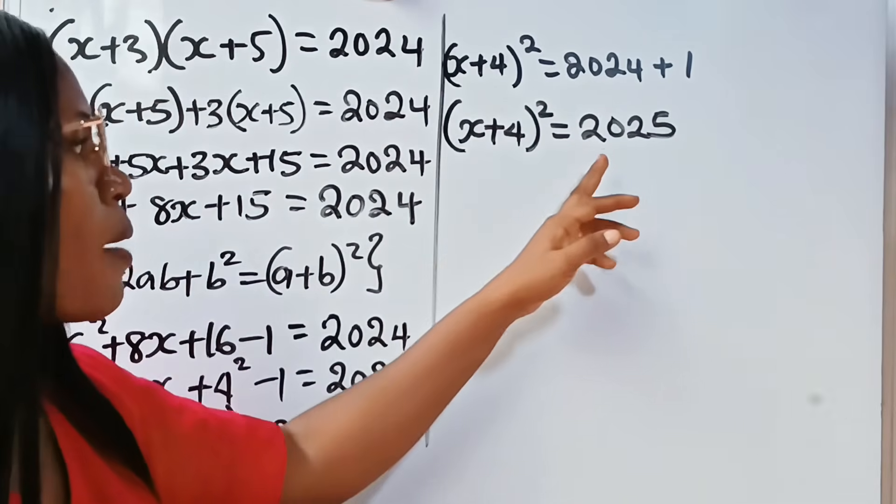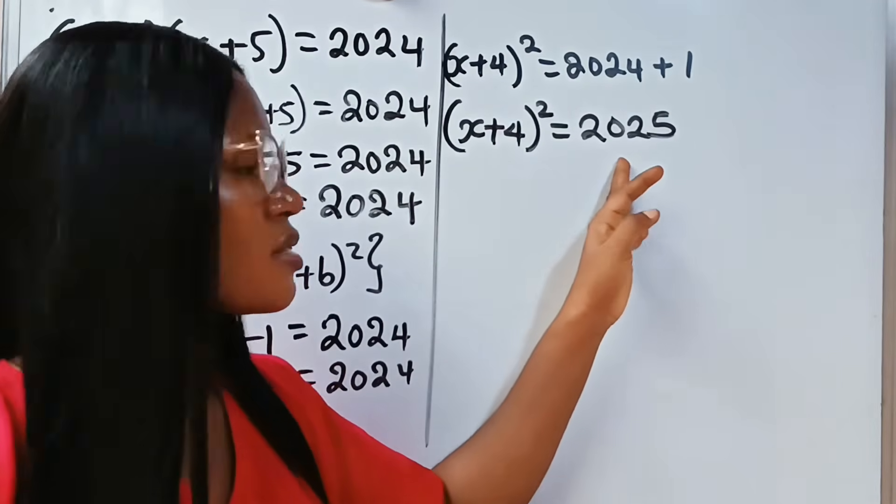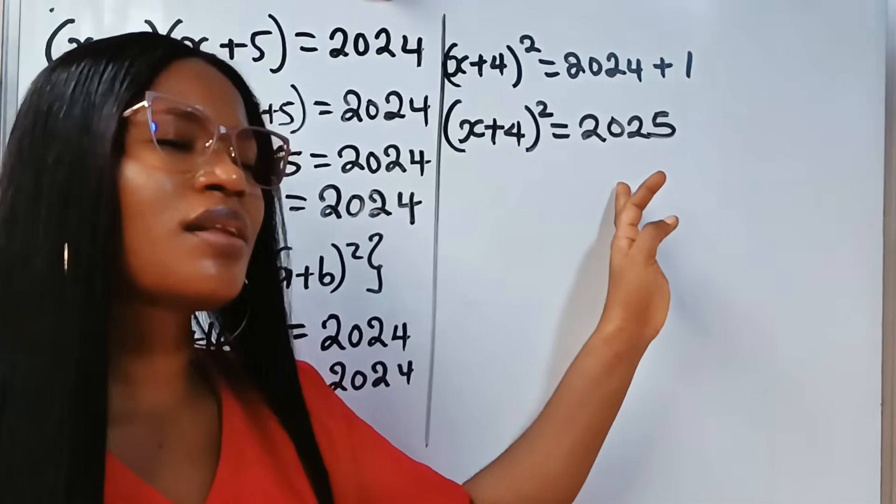Now, this is a square. And is 2025 a square? Yes. How do I mean?